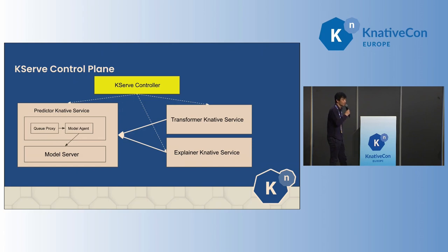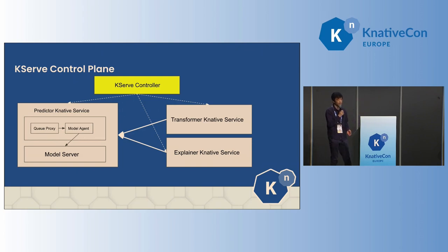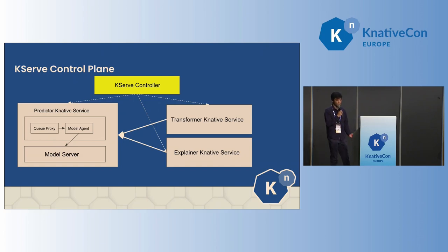The KServe control plane provisions a few core inference components: a predictor, transformer, and explainer. The predictor runs as a Knative service — the main container runs the model server alongside the queue proxy, which exposes autoscaling metrics and controls concurrency. We also have a model agent sidecar which handles inference-related features like logging requests and performing batching, then sends requests to the model server. The transformer transforms raw input requests and converts them to the format the model server expects according to the standardized inference protocol. The explainer sends requests to the predictor to generate human-interpretable predictions and explanations.